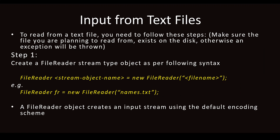It should be an existing file. For example: FileReader fr = new FileReader("names.txt"). Here, names.txt is the file which exists on the disk. If not, it will throw an exception. The FileReader object creates an input stream using the default encoding scheme — Unicode is the encoding scheme used by Java, so the FileReader uses Unicode byte encoding.